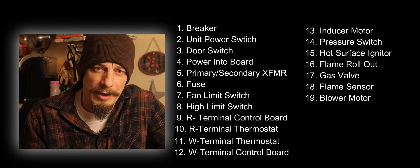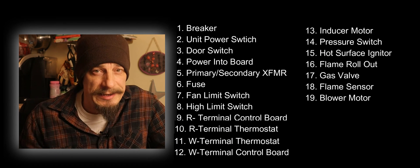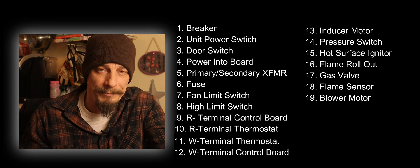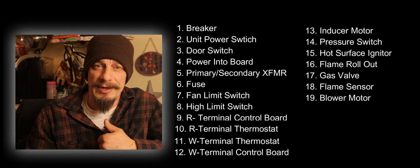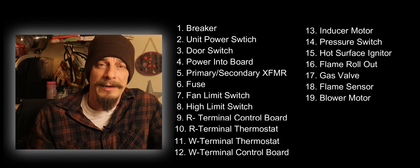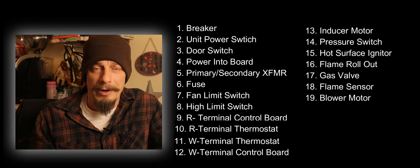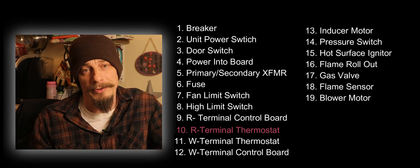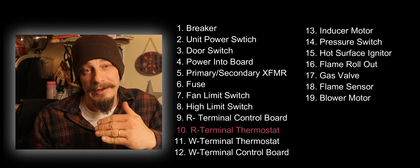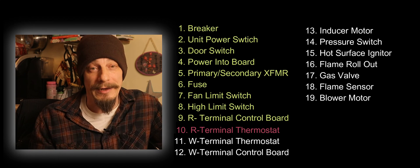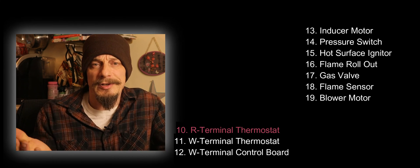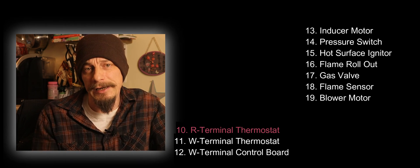We're going out on a no heating call and the customer says they put the heat on at the thermostat and absolutely nothing happens. You walk up to the thermostat, you verify there's heat, you take the thermostat off the wall and you check for power at your R terminal and you have power at your R terminal. What does this mean? If you look at the list, if you have power at the R terminal at your thermostat, everything before that is probably working just fine so you can eliminate everything off that list.